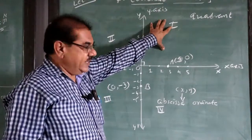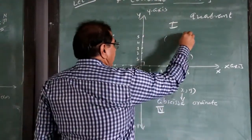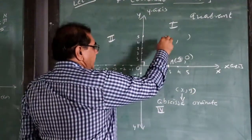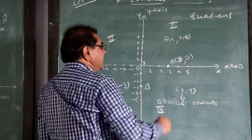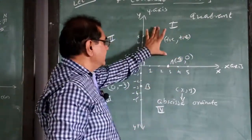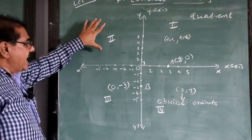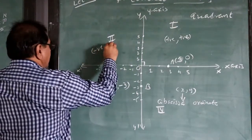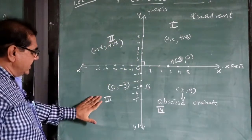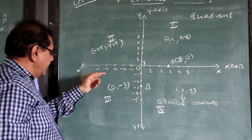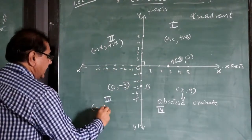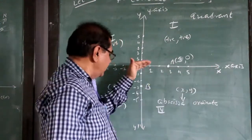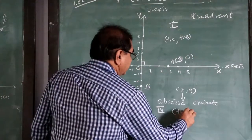Any ordered pair lying in the first quadrant is of the type (positive, positive). In the second quadrant, x is negative and y is positive — so it is (negative, positive). In the third quadrant, both x and y are negative — (negative, negative). And in the fourth quadrant, x is positive and y is negative — (positive, negative).